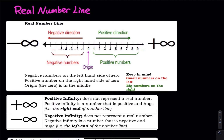We don't know the exact value of positive infinity and negative infinity. The easiest way to memorize how the real number line works: we have zero right in the middle, negative on the left, positive on the right. Or you can say we have zero in the middle, big number on the right and small number on the left. As you move to the right the numbers are getting bigger and bigger; as you move to the left, the numbers are getting smaller and smaller.